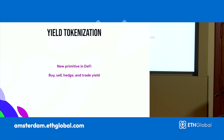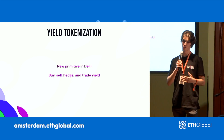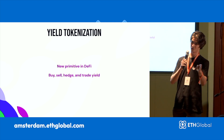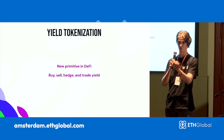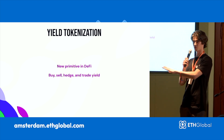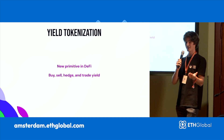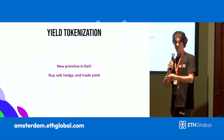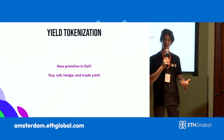This is where APWine comes in. We're a yield tokenization platform. This is a new primitive in DeFi that enables you to split your deposit and your future yield into two different tokens that I'm going to describe a little bit later on. This enables you to buy, sell, hedge, and trade your future yield in advance.